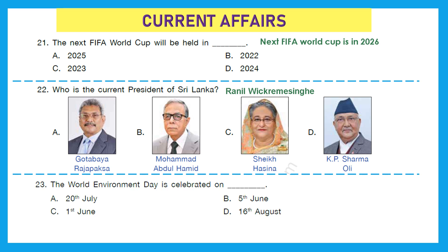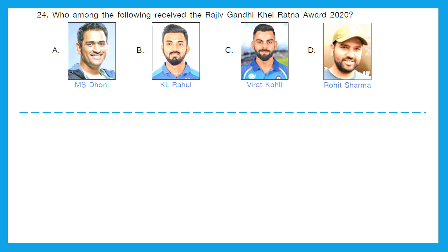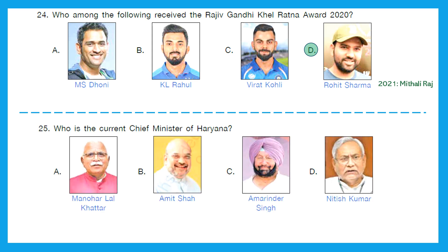Question 23: The World Environment Day is celebrated on? The right answer is 5th June every year. Question 24: Who among the following received the Rajiv Gandhi Khel Ratna Award in 2020? The right answer is option D, Rohit Sharma. If the question asks about 2021, it would be Mithali Raj from the cricketers. Question 25: Who is the current chief minister of Haryana? The right answer is option A, Manohar Lal Khattar.